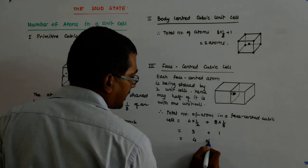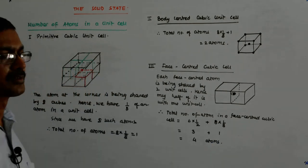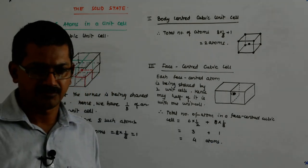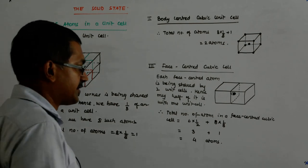So, face-centered has 4 atoms contained in it, fine? Simple calculations, but they will be required when we go ahead to calculate the densities, fine?